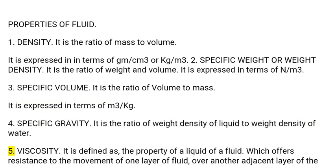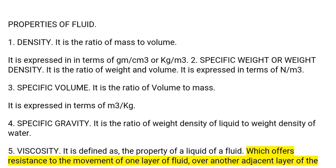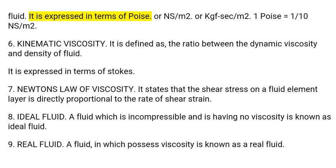5. Viscosity: It is defined as the property of a fluid which offers resistance to the movement of one layer of fluid over another adjacent layer of the fluid. It is expressed in terms of poise or Ns per square meter or kgf·sec per square meter. 1 poise equals 1/10 Ns per square meter.